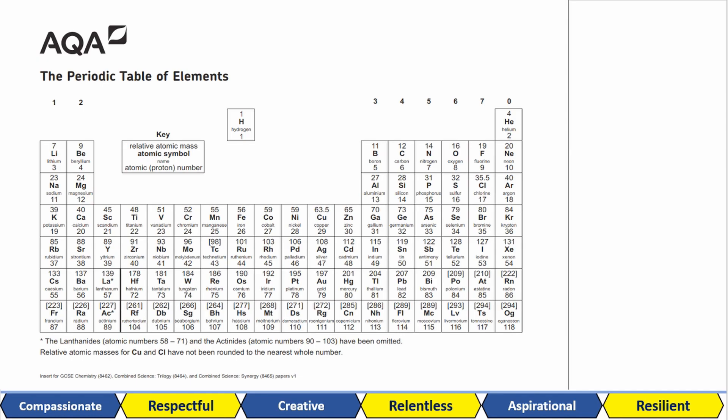This is what the periodic table that you'll get in your GCSE looks like. It's actually such a beautiful structure. It's arranged in vertical columns called groups from 1 to 0, left to right. At GCSE you can skip the middle section which are the transition metals. The horizontal rows are your periods.